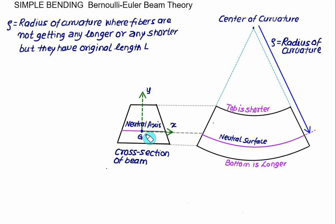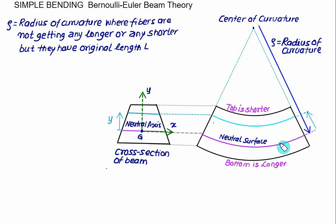We consider a fiber at a distance Y from the neutral axis. In the cross-section, this fiber of interest is at distance Y from the centroid or neutral axis. In the slice, we mark this same fiber at distance Y from the neutral surface. We want to know the change in length at any distance Y from the neutral axis.